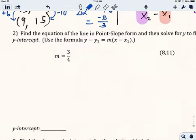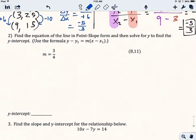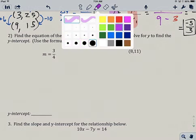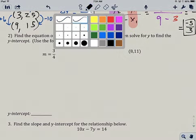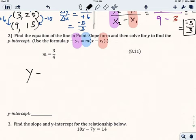It says find the equation of the line in point-slope form and then solve for y to find the y-intercept. This is what we learned the previous day in class. I'm going to use the formula, and the way this formula works, I'm going to remember that I need to fill in for y1, m, and x1. I need to fill in for m. I tend to think of it like this: y minus something equals something times, in parentheses, x minus something.